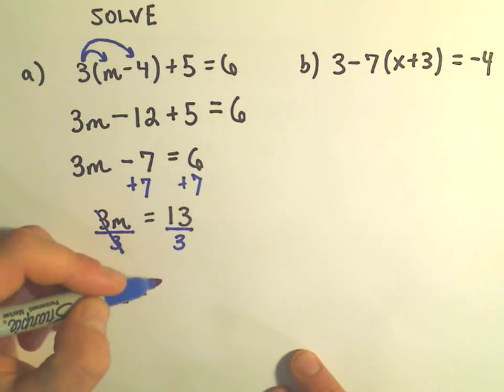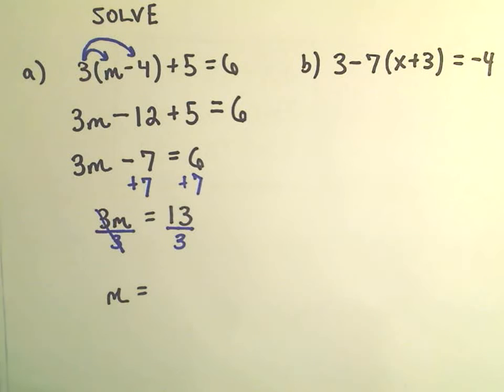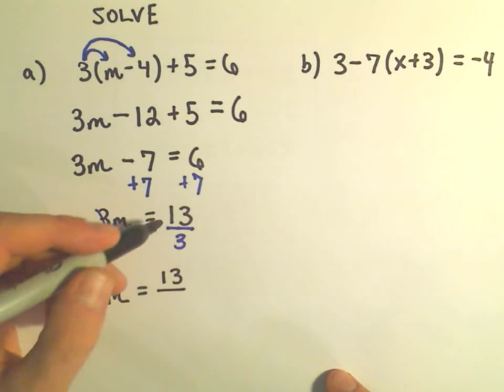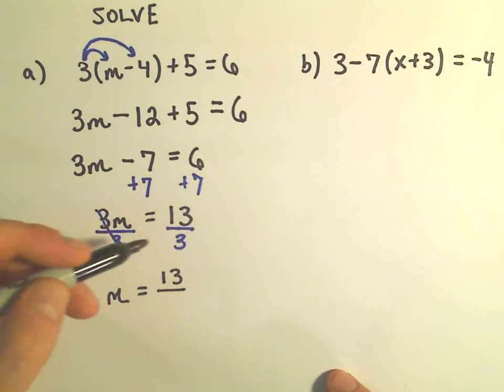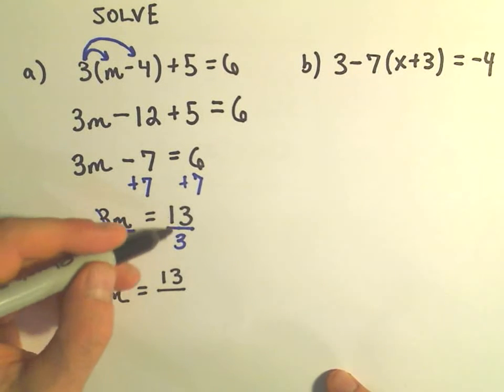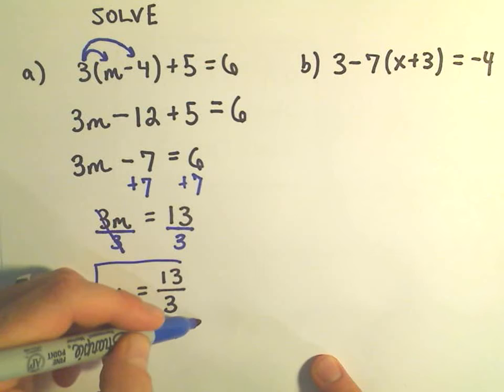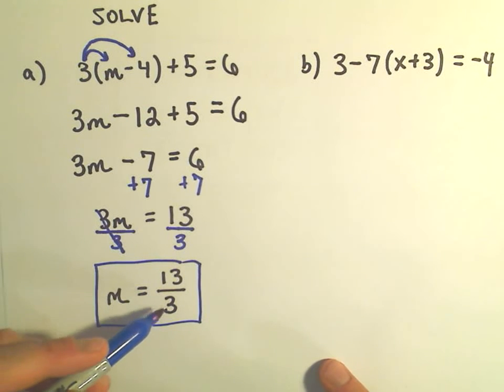And now 13 divided by 3, that doesn't really reduce, they're both prime numbers, and even if only one of them were prime they have to have some common factors, and certainly they don't in this case. So our final answer in this case would simply be m equals 13 over 3.